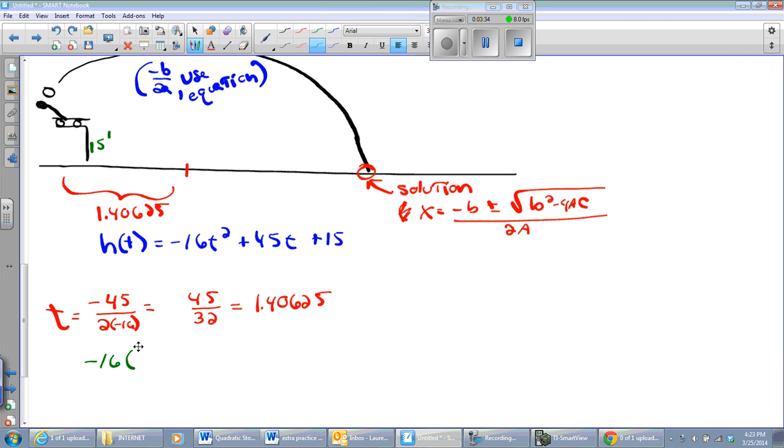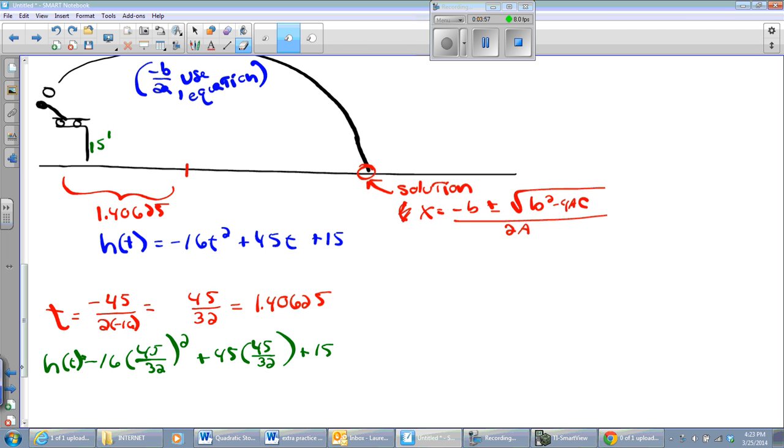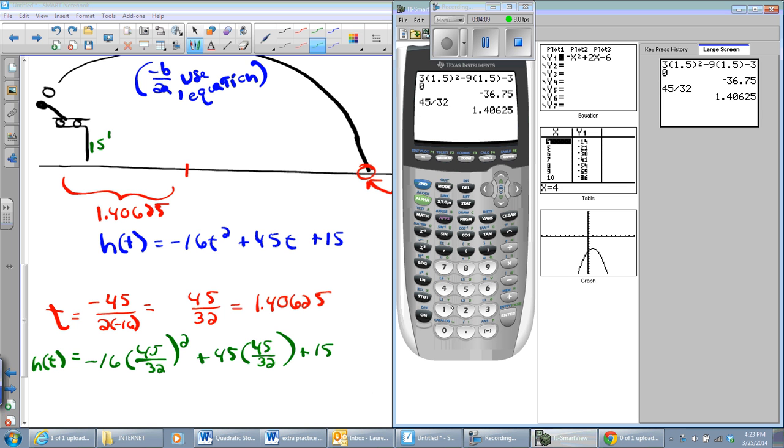I have to plug the x value in or the t value. What equation am I using? Well, it's h of t equals negative 16t squared plus or minus v sub o t plus h sub o. And in this problem, specifically, it's going to be h of t equals negative 16t squared plus 45t plus 15. Because it's being launched from a height of 15 feet off the ground.